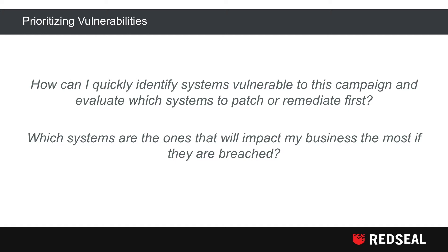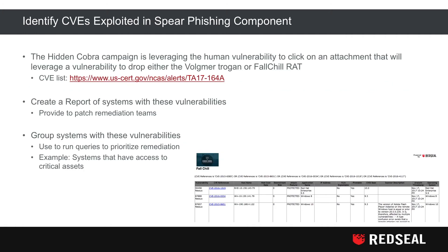Prioritizing vulnerabilities: how can I quickly identify systems that are vulnerable to this campaign and evaluate which systems to patch or remediate first? Which systems are the ones that will impact my business the most if breached? The Hidden Cobra campaign is leveraging the human vulnerability — getting us to click on an attachment — which then leverages a vulnerability on the endpoint to drop either the Volgmer Trojan or the FALLCHILL RAT.